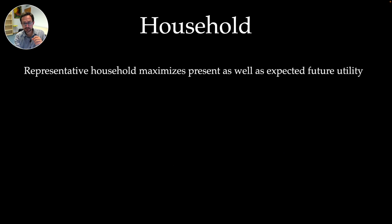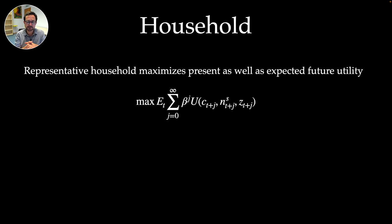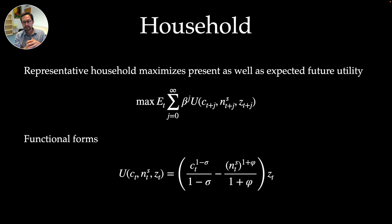Let's start with the household. The representative household maximizes present as well as expected future utility. E_T is the conditional expectation operator based on information at period T. Beta is the discount factor — how patient is the household, how much does it value current consumption compared to future consumption? Now let's look at the functional form used in this model.